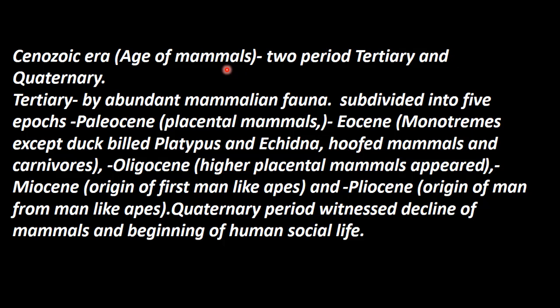The Tertiary period is the age of mammals — abundant mammalian animals, which are very important. The Tertiary period is subdivided into five epochs, one of which is the Paleocene.